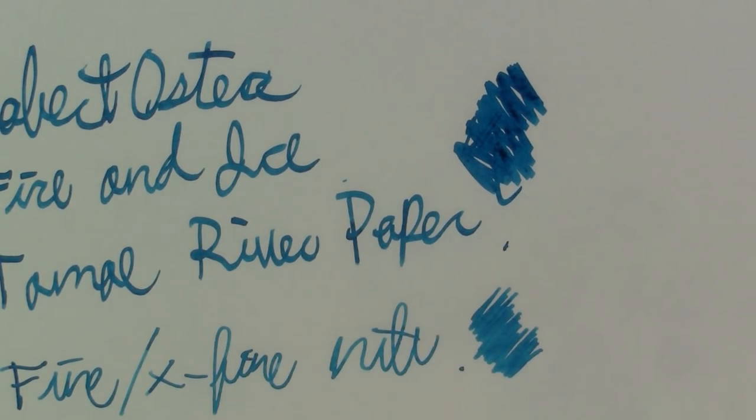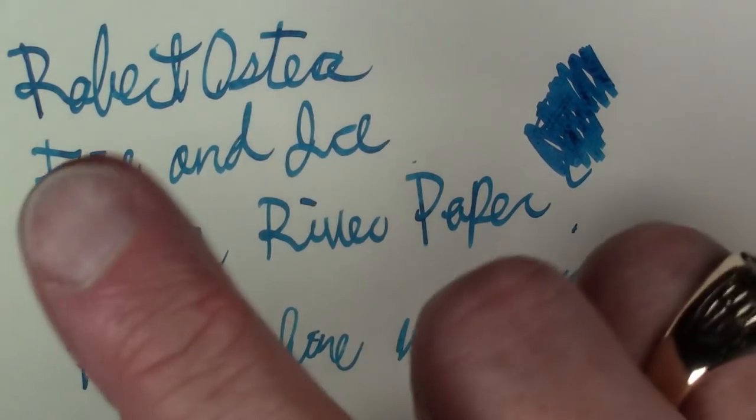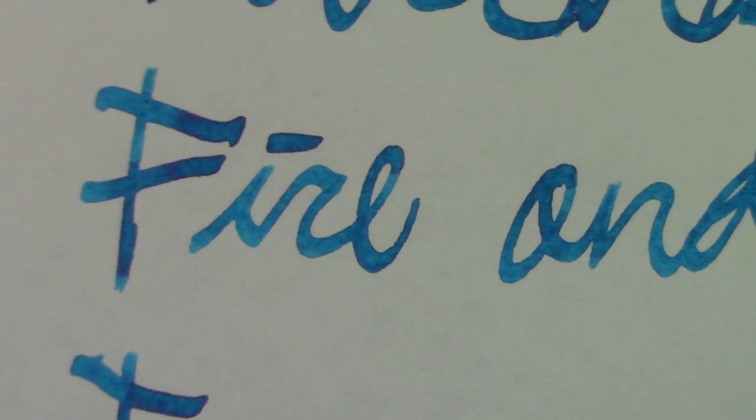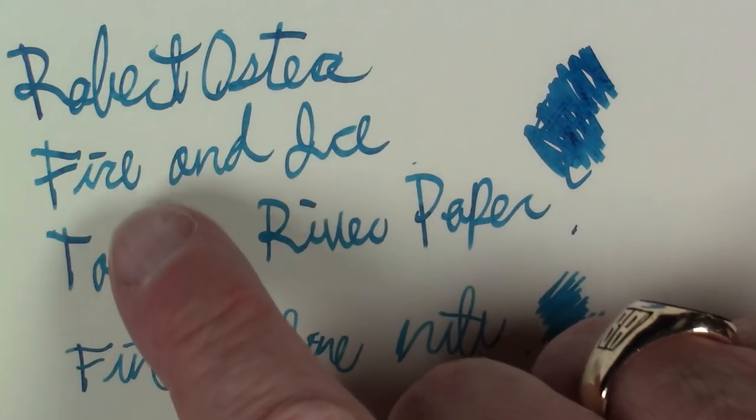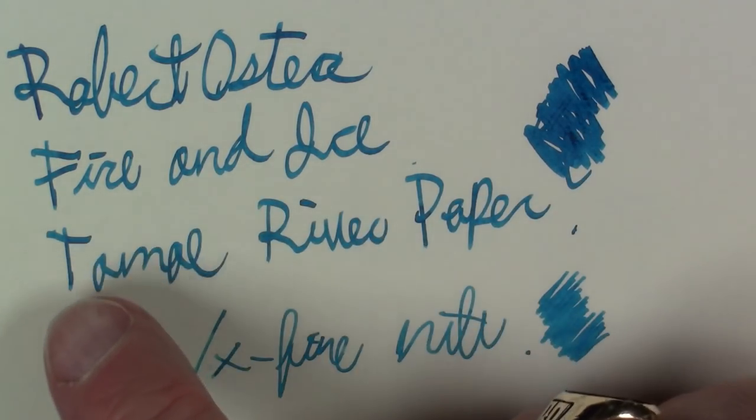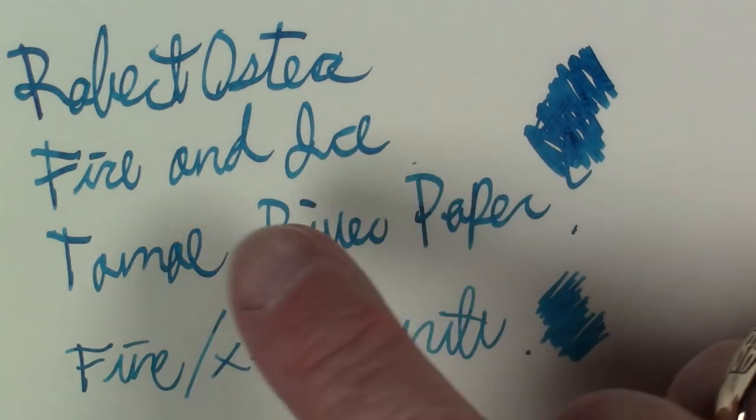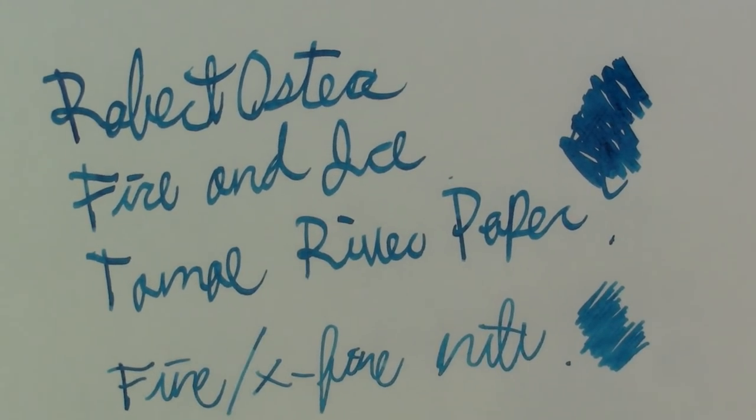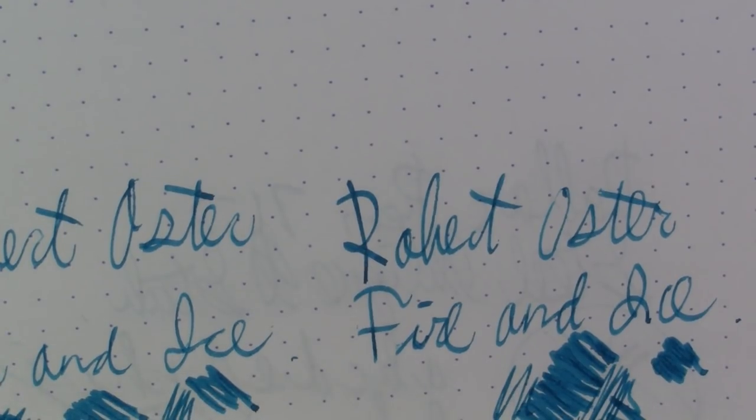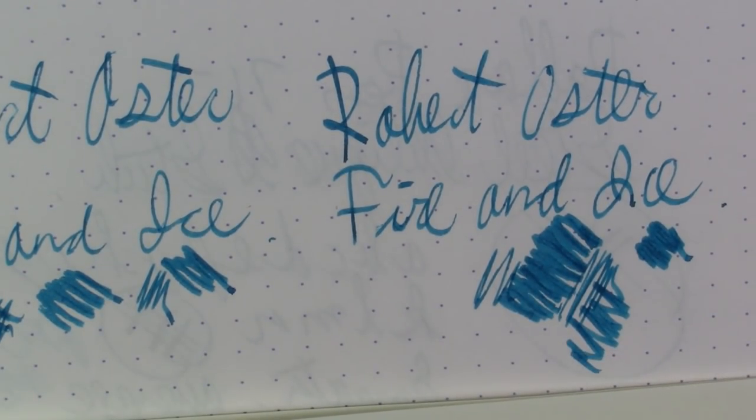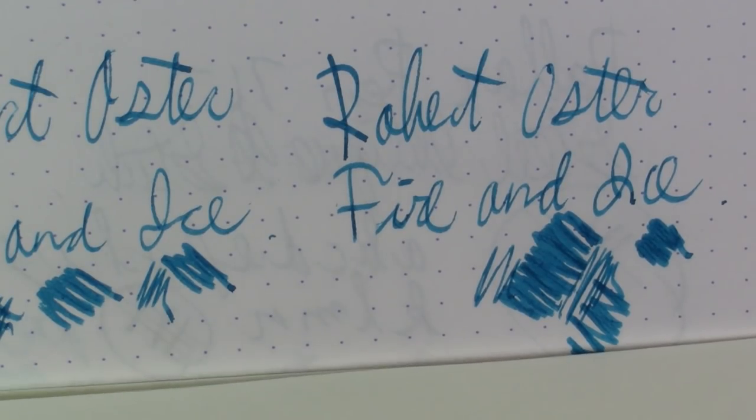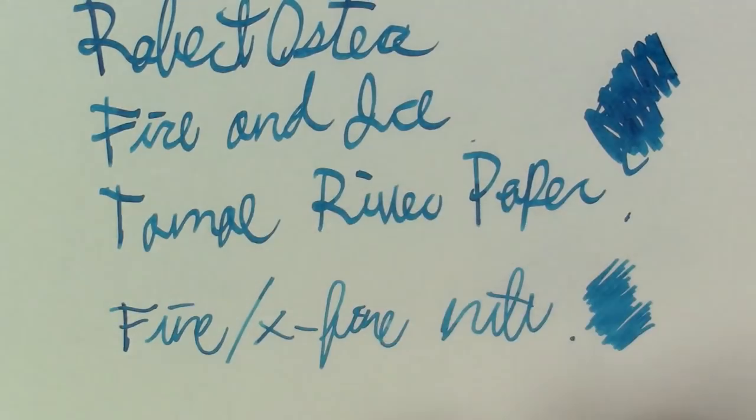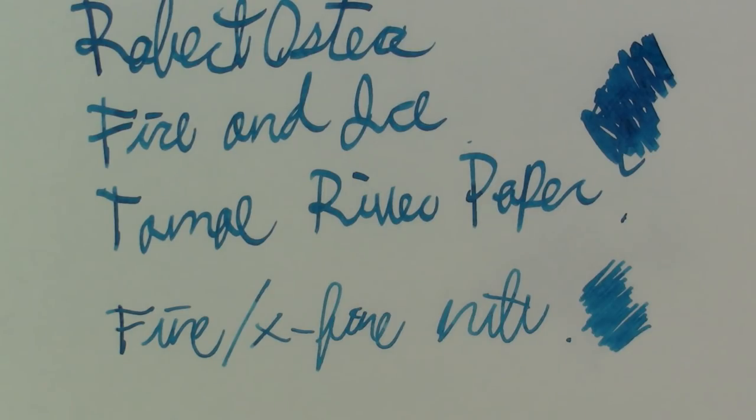And if you look very very closely, you can see there are tiny tiny amounts of red shading on that you can see on this Tomoe River paper. On the Rhodia paper, that red shading does not really manifest itself really much at all, but you do kind of pick it up on this Tomoe River paper, which makes it look pretty nice.